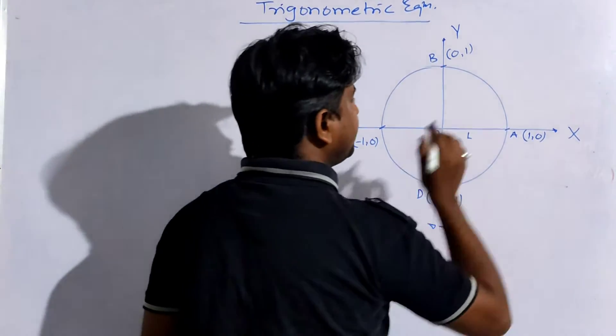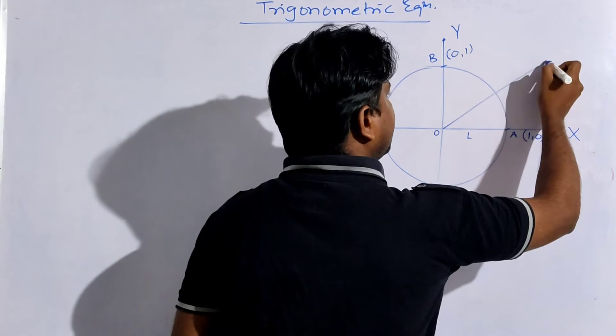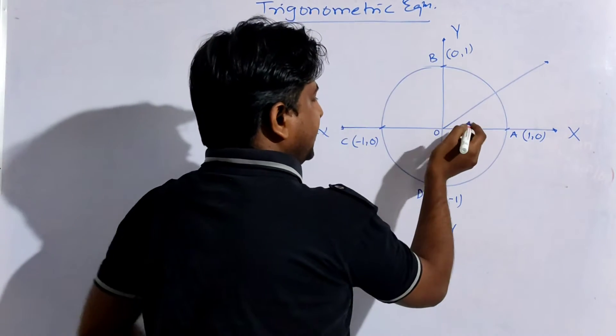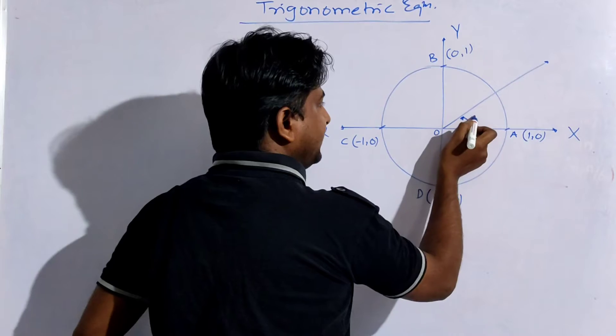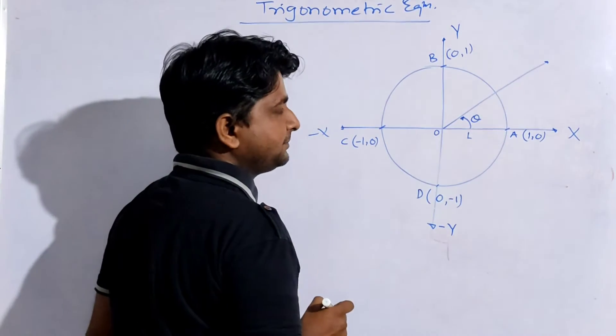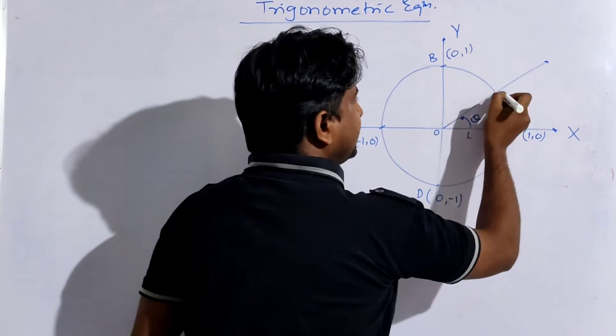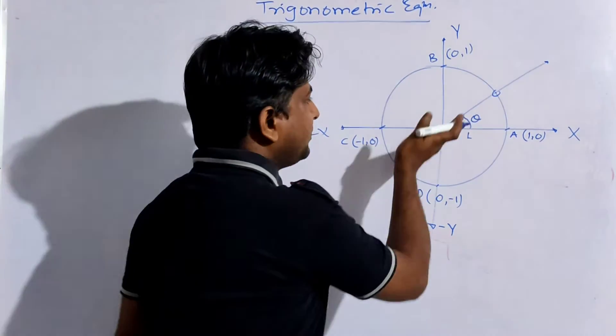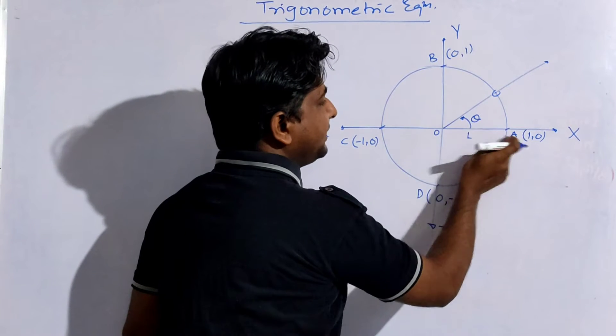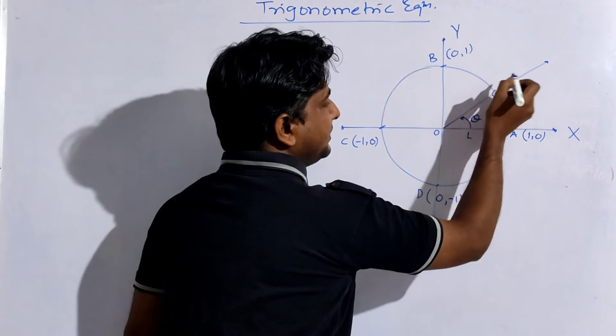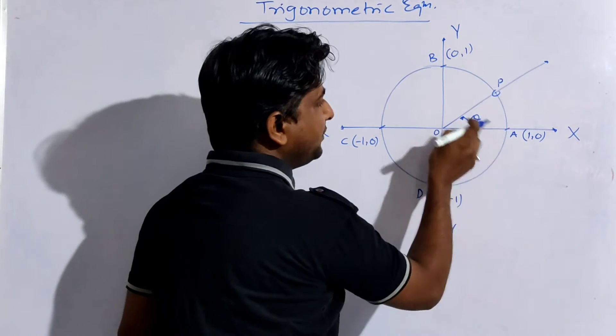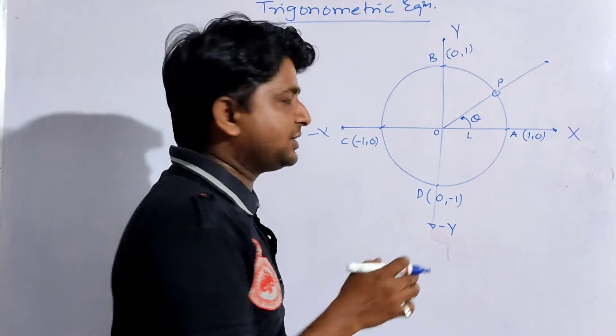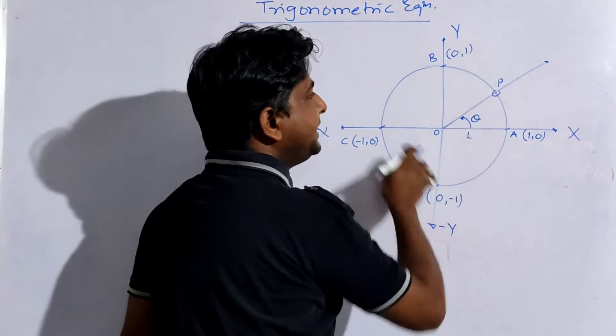Now why are we defining this? Just consider an angle, an acute angle, in the anticlockwise direction. This angle is theta. Now we are very much concerned about this point - the point of intersection of the terminal ray of angle theta. Suppose this is point P. This point P is the intersection of ray OP with the unit circle.